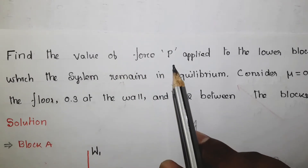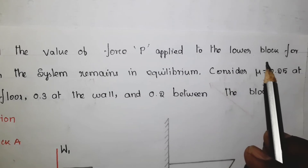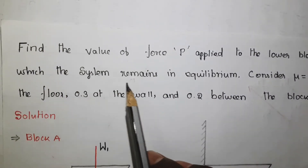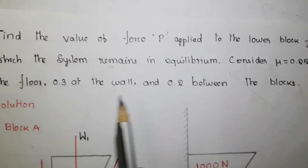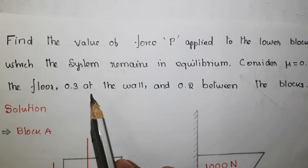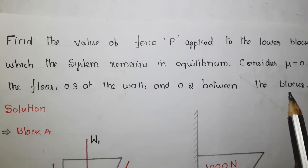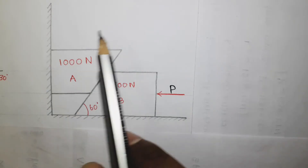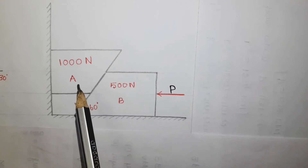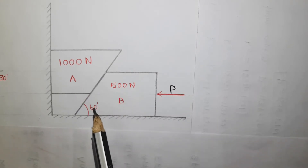Find the value of the force P applied to the lower block for which the system remains in equilibrium. Consider mu equal to 0.25 at the floor, 0.3 at the wall, and 0.2 between the blocks. There are two blocks A and B. A is 1000 Newton, B is 500 Newton, and the angle is 60 degrees.